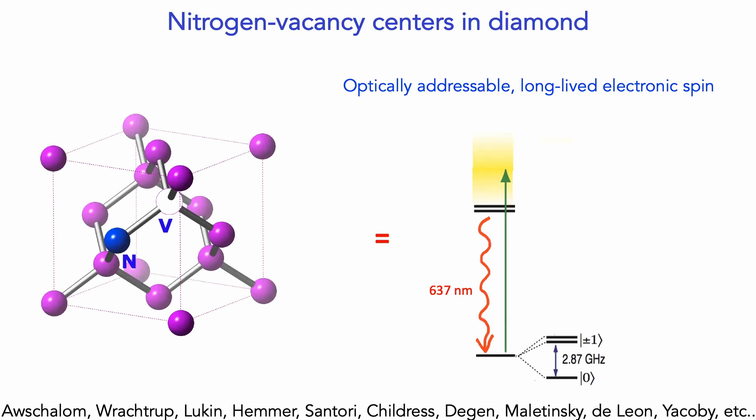These defects can be addressed on the single defect level. With a simple off-the-shelf confocal microscope and some microwave components, I can scan a laser over the diamond and monitor the fluorescence to see single defects, because these defects emit photons at a rate of about 100,000 photons per second, which can be picked up by single photon counters. So one can optically address, initialize, and read out a single defect center. That defect center is sensitive to its local environment and hence makes an excellent sensor.